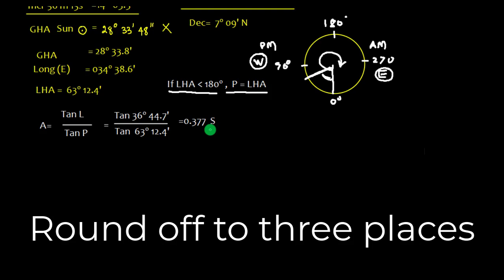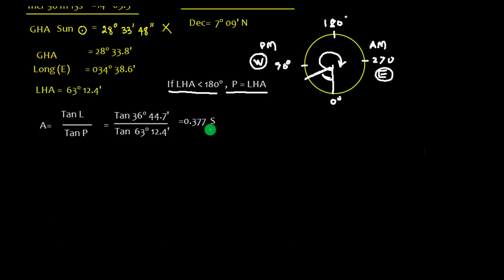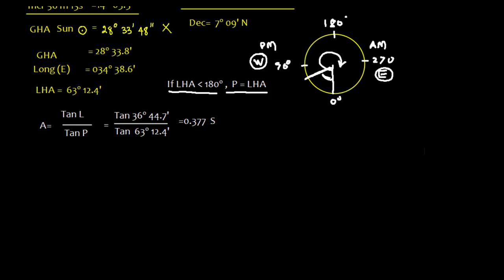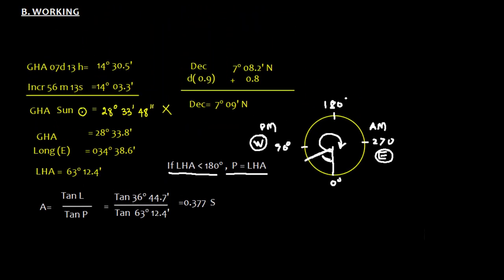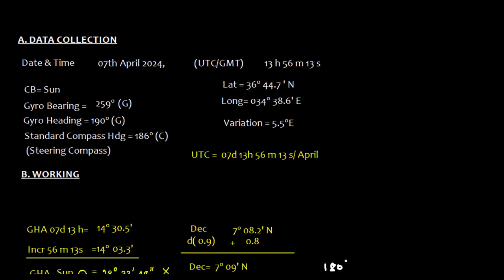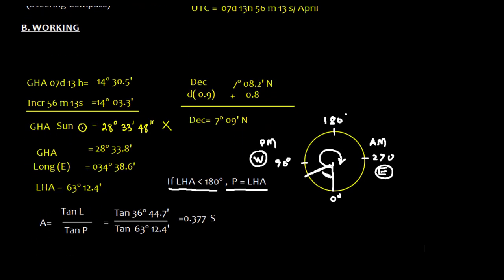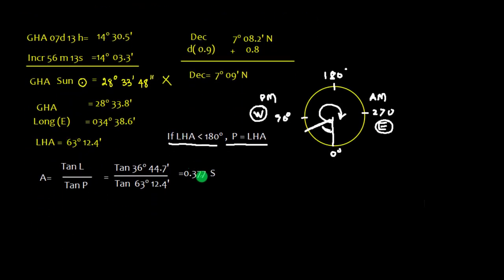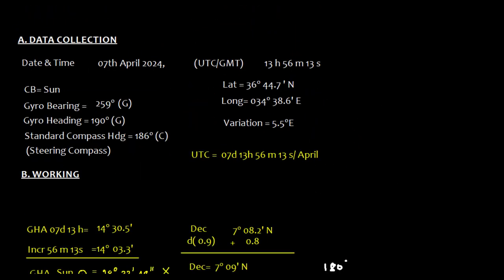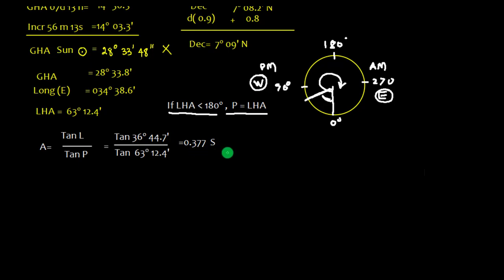There is no point using six, seven places of decimal. Now the naming part: A is named opposite to latitude, except where hour angle is between 90 and 270. So here the hour angle is 63 degree, so we need to name opposite to latitude. The latitude is north, so we name as south.